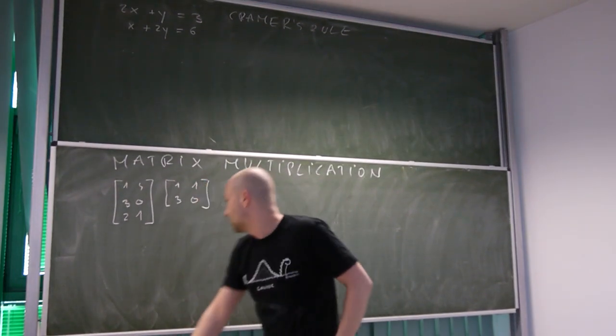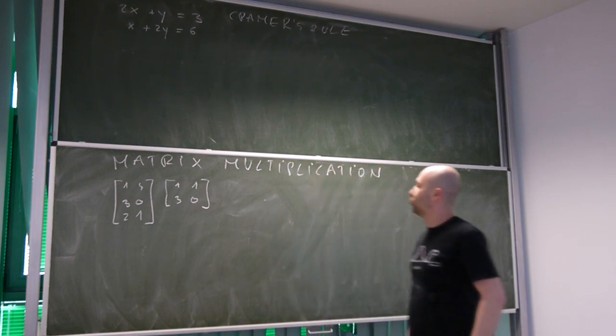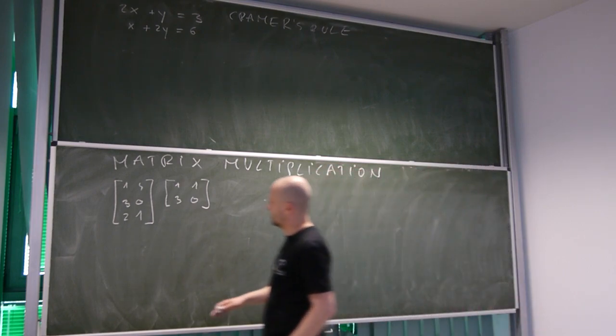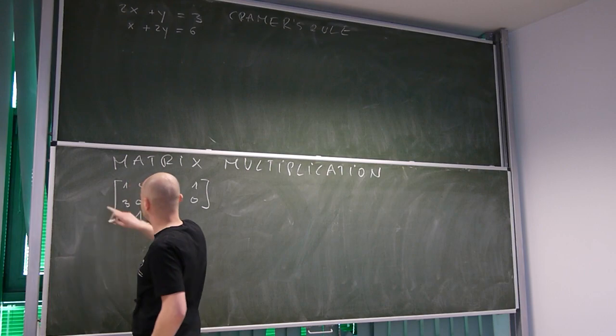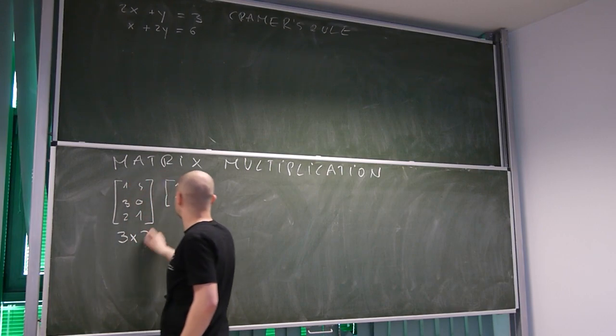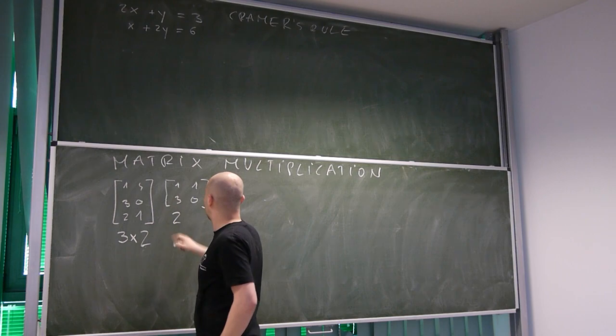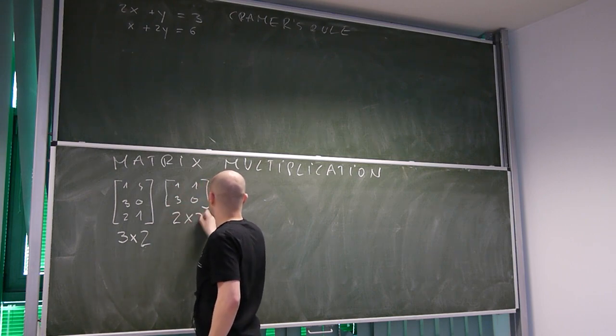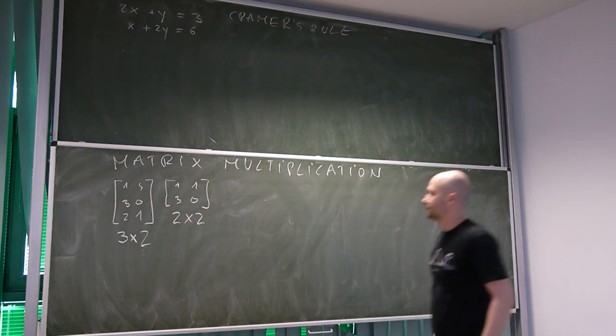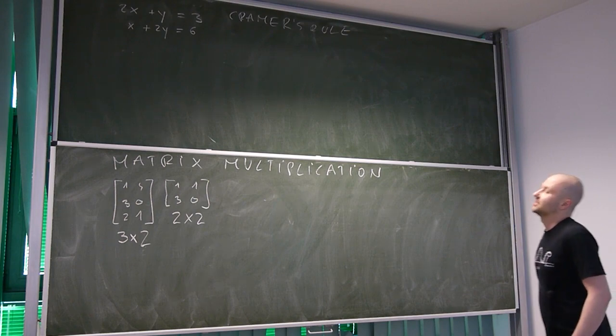How do we multiply two matrices? First, we look at the dimension of matrices. This one has three rows and two columns. This one has two rows and two columns. Can we multiply them? Yes.